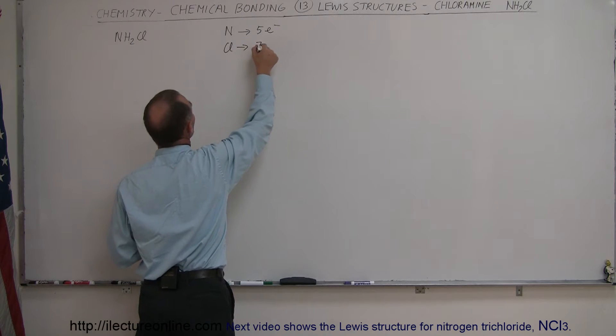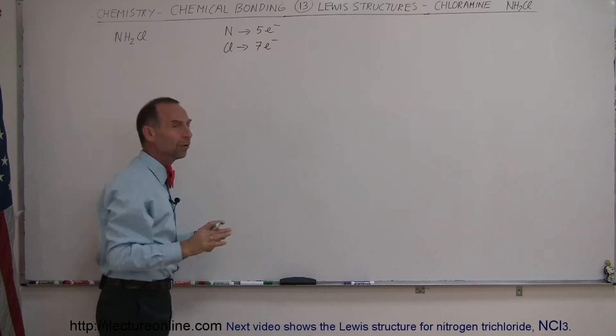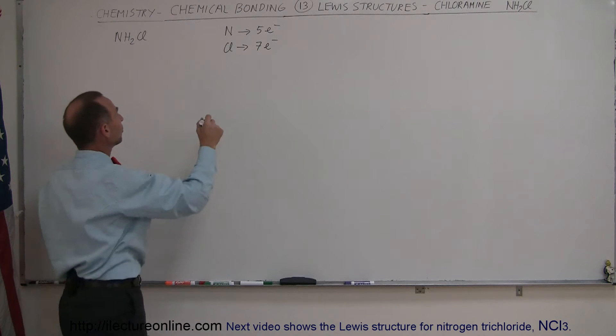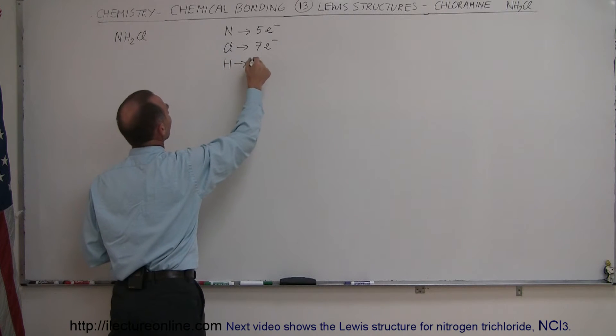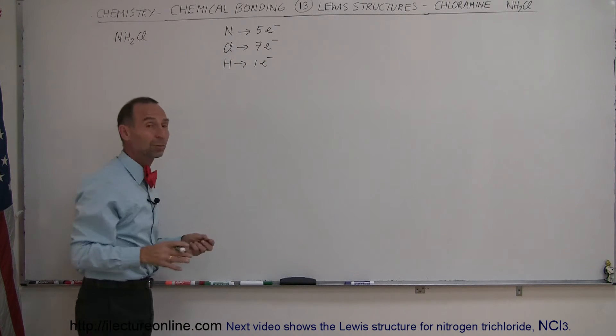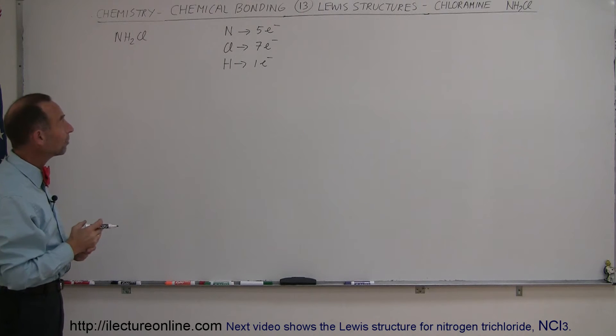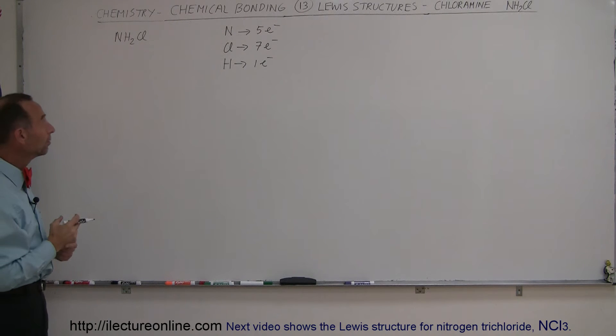Chlorine has seven valence electrons, so it has a tendency of only making one bond. And hydrogen has only one valence electron, but it only can hold a maximum of two in its valence band, so it is expected to make one bond.